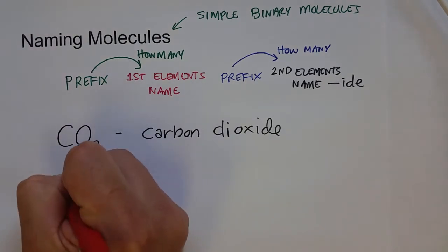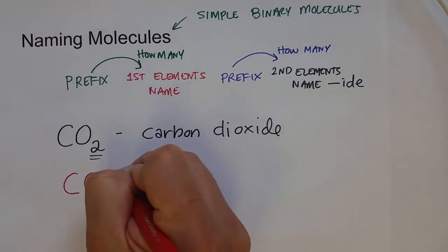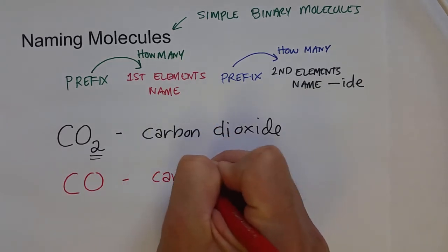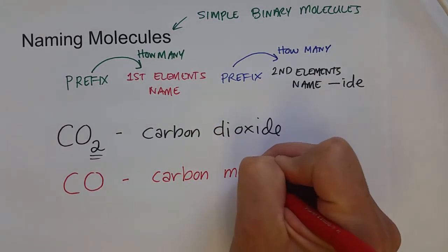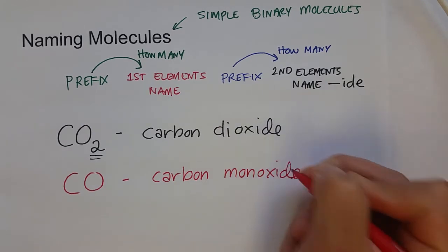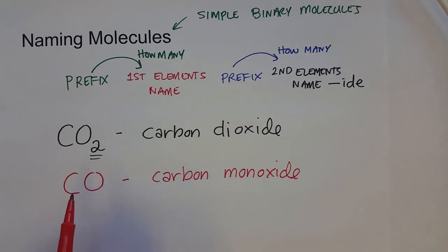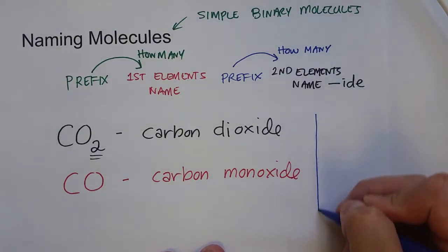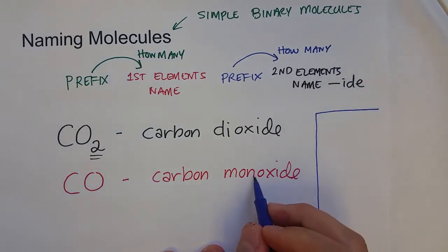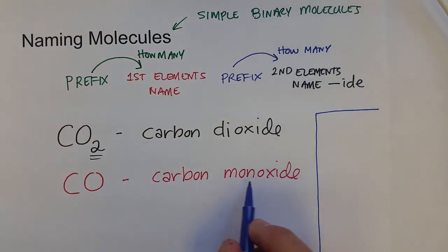If we wanted to name this molecule CO, you'd probably come up with carbon monoxide. We're using the prefix mono to indicate that we have one oxygen atom. And again, there's still only one carbon atom, so we don't have a prefix for that. You'll also notice that we didn't say carbon monooxide. Whenever there's a double vowel between the prefix and the name of the element, we usually drop off one of the vowels.